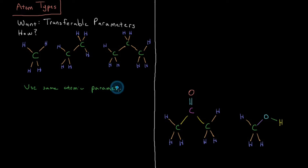So instead of having to pick separate parameters, we'd have one set — these two are symmetry equivalent, so there'd be one, two; these two are equivalent, that one's different, so we'd have one, two, three, four. Instead of deriving four different sets of parameters for these four symmetry-unique carbons, we could derive one set of parameters and use it for all of them.